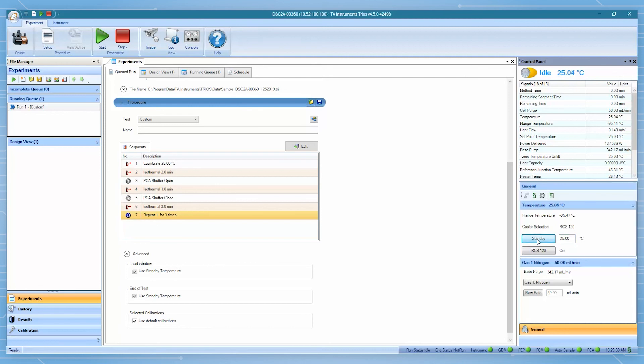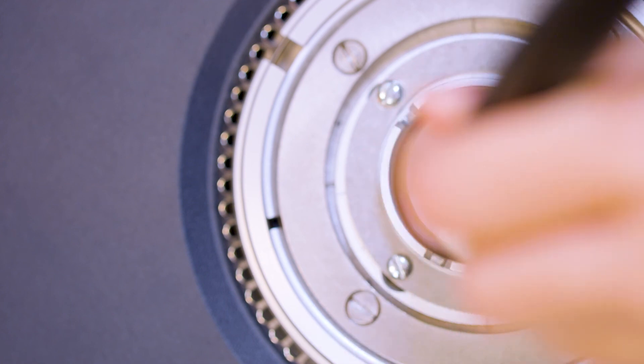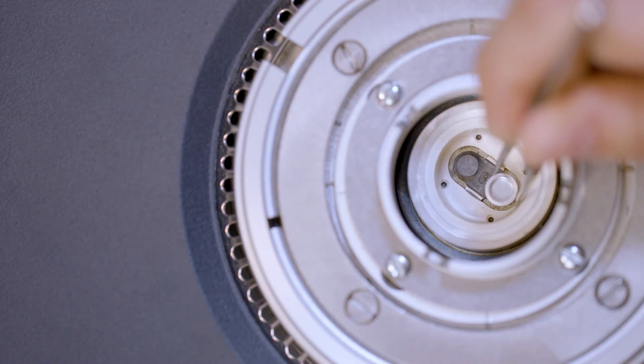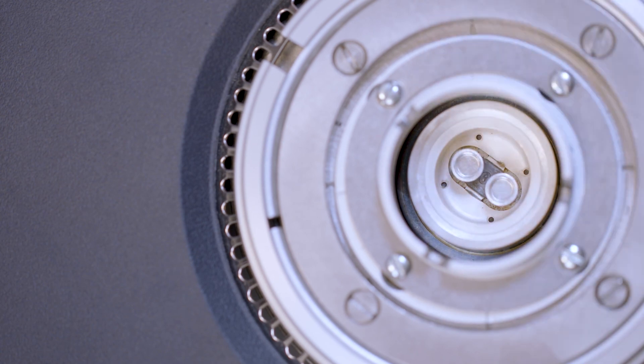To load the sample at room temperature, set the standby temperature to room temperature. Remove the adapter from the light guide. Insert the sample in the front, an empty open pan in the back, and ensure to align the pan in the center of the platform.